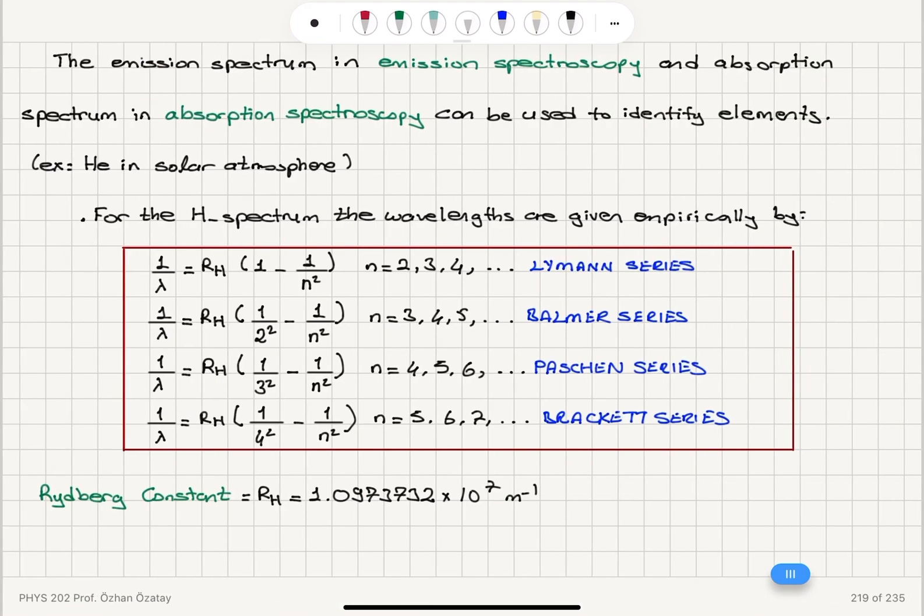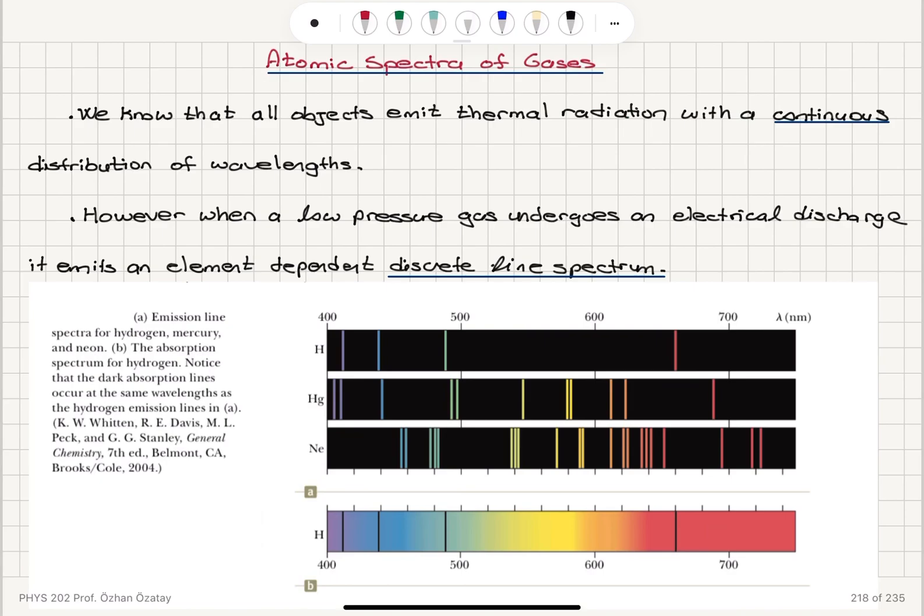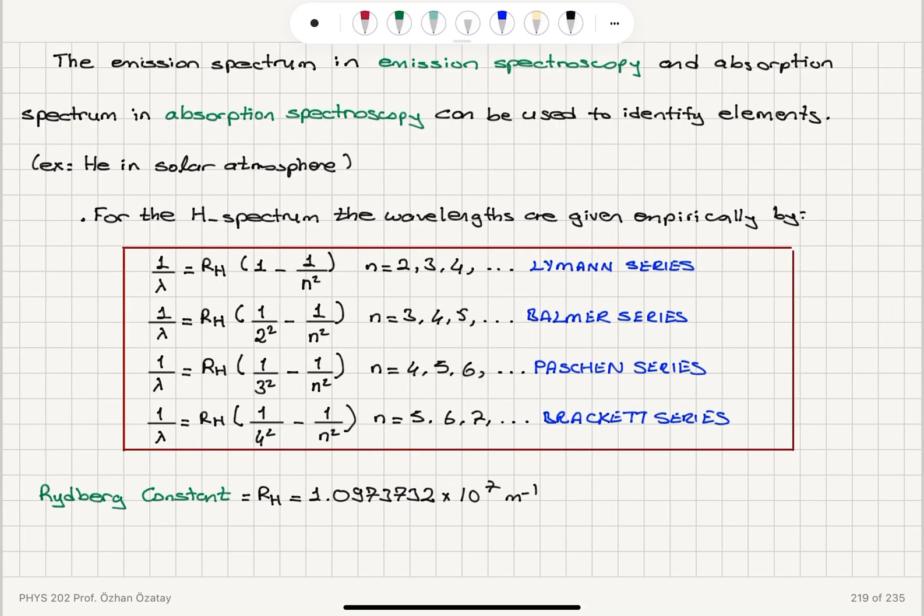The emission spectrum in emission spectroscopy or the absorption spectrum in absorption spectroscopy can be used to identify elements. For example, there is helium in solar atmosphere because we know its emission spectrum. If we provide these wavelengths, we will see that in the absorption spectrum these wavelengths will be missing. That power will be absorbed by these atoms.